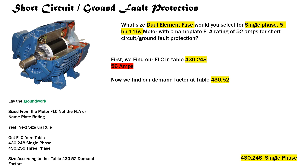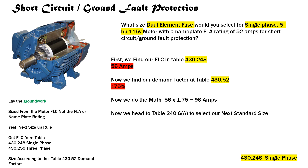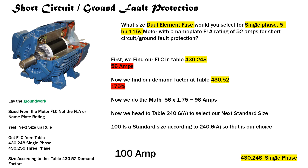We head to table 430.52, start on the left side for single-phase, come across to our type of overcurrent protection, and the demand factor is 175 percent. We do the math: 56 × 1.75 gives us 98 amps. We head to table 240.6(A), select the next standard size, which is 100 amperes. So our short circuit ground fault protection for this motor is 100 amps.